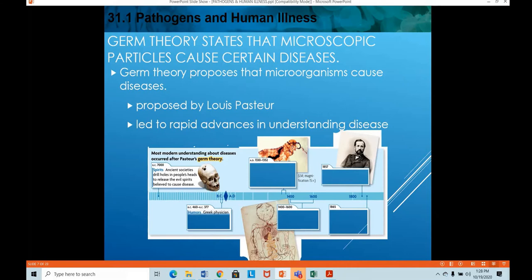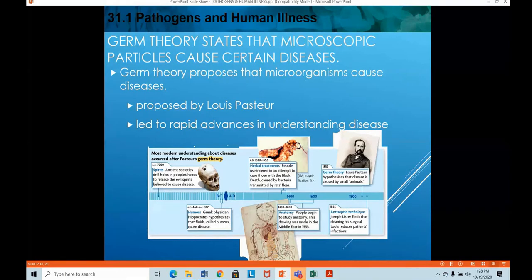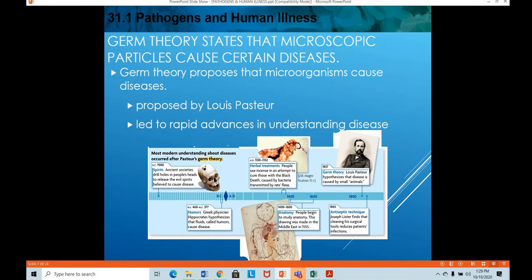The germ theory states that microscopic particles — microorganisms like bacteria, viruses, and fungi — cause diseases. This germ theory was proposed by Louis Pasteur, and it led to rapid advances in understanding diseases. In the last lesson we studied how people used to think diseases were spreading back in 490 AD, and then in 1857 Pasteur hypothesized that diseases could be spread by microscopic organisms which cannot be seen with the naked eye.